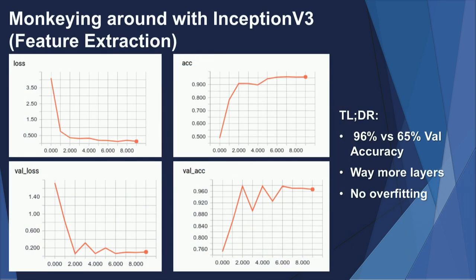Let's look at the results using only feature extraction on the monkey dataset. The loss is going down and the validation loss tracks it closely — no overfitting. Accuracy is going up and validation accuracy follows. The TLDR: 96% validation accuracy using transfer learning, versus 65% without. This is an extreme example, but it makes an extreme point. We're training a much more complex network and not overfitting, because source domain training data keeps overfitting away.